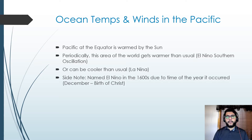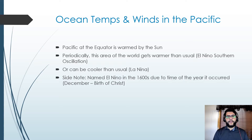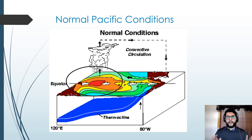Sometimes that area can get warmer than normal temperature, and that's what we would call an El Niño. Sometimes it can be cooler than usual, and we call that a La Niña situation. El Niño was named in the 1600s by voyagers who noticed it occurred around December — the birth of Christ. Here are normal conditions: here's the equator line.